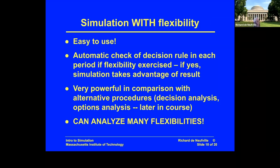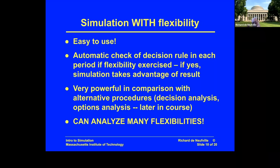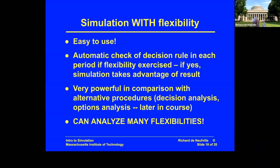Once you have that, the automation of the implementation of flexibility is: as a computer goes through time from period one to period two to period three, each period checks to see whether the decision rule is invoked — that is, have the conditions been met. If the conditions are met, for example the capacity has been less than the actual demand, then you would say we're going to make the investment to build an extra floor. It's going to cost money and increase the capacity. You include that expense in the cash flow and increase the capacity for the analysis of the next period.